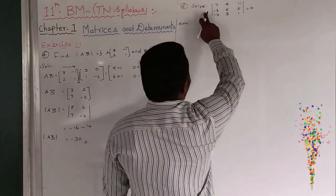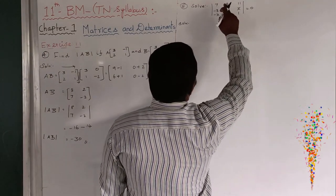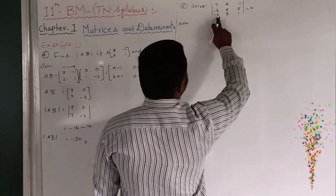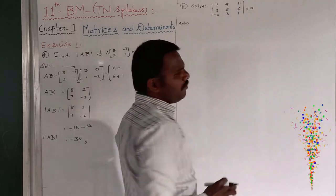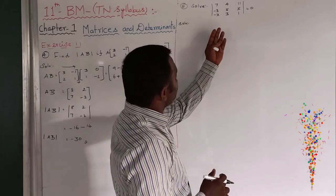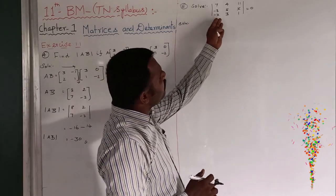Next, we take question 2. Solve the determinant of a 3 by 3 matrix. 7, 4, 11. Minus 3, 5, X. Minus X, 3, 1. So, solve means what is the value of X. So, that is the question. What is the value of X by using the determinant method.